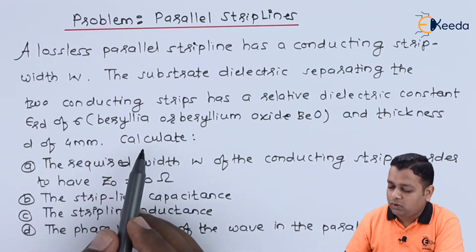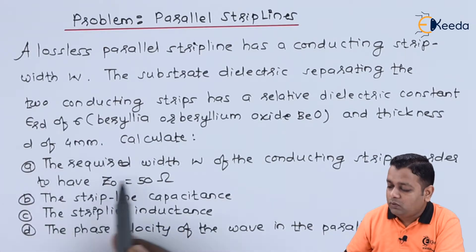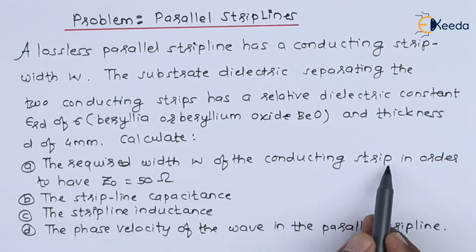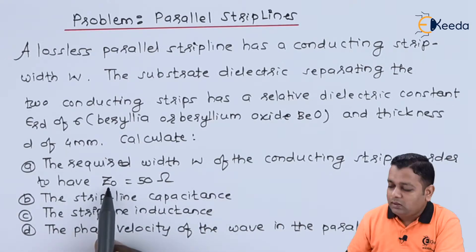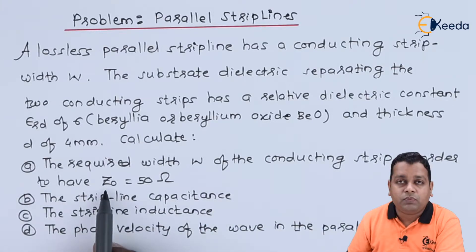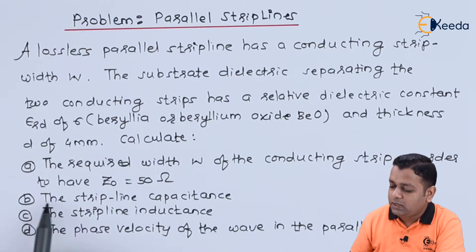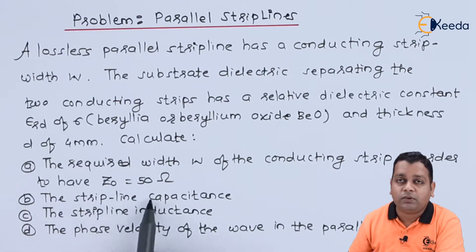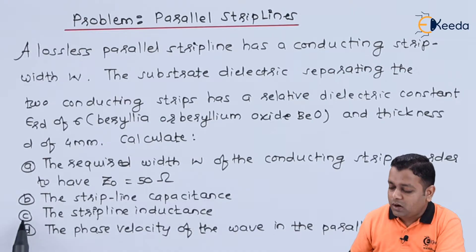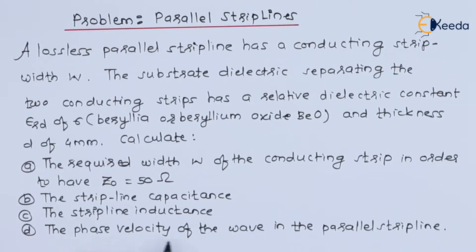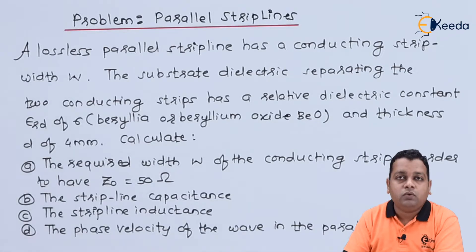We are asked to calculate: (a) the required width w of the conducting strip for a characteristic impedance Z0 = 50 ohm, (b) the strip line capacitance, (c) the strip line inductance, and (d) the phase velocity of the wave in the parallel strip line.